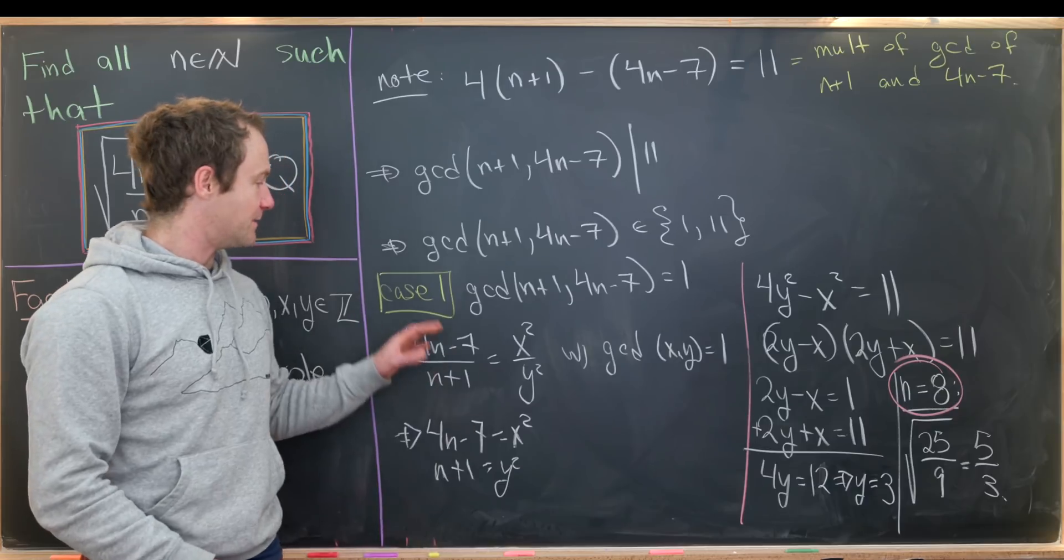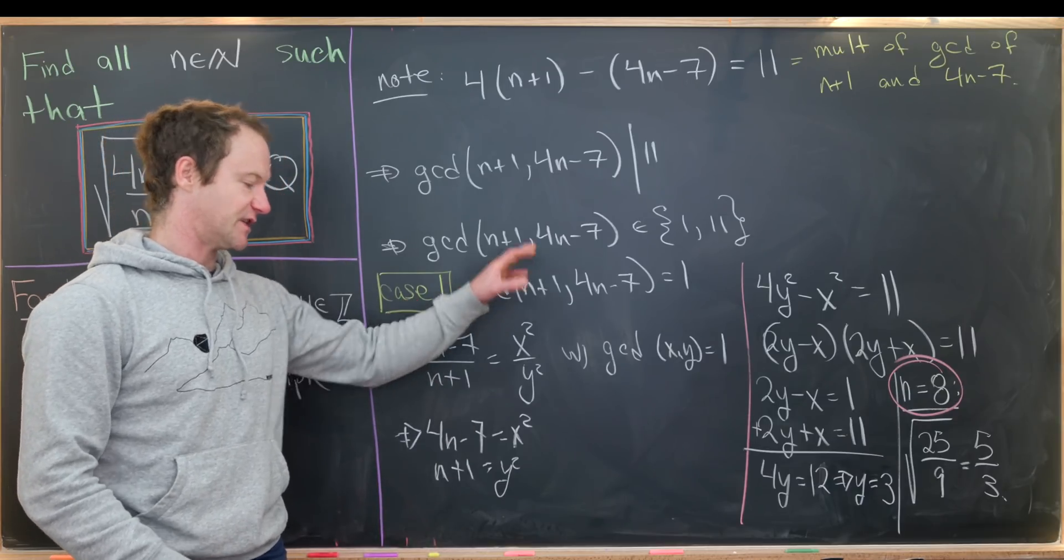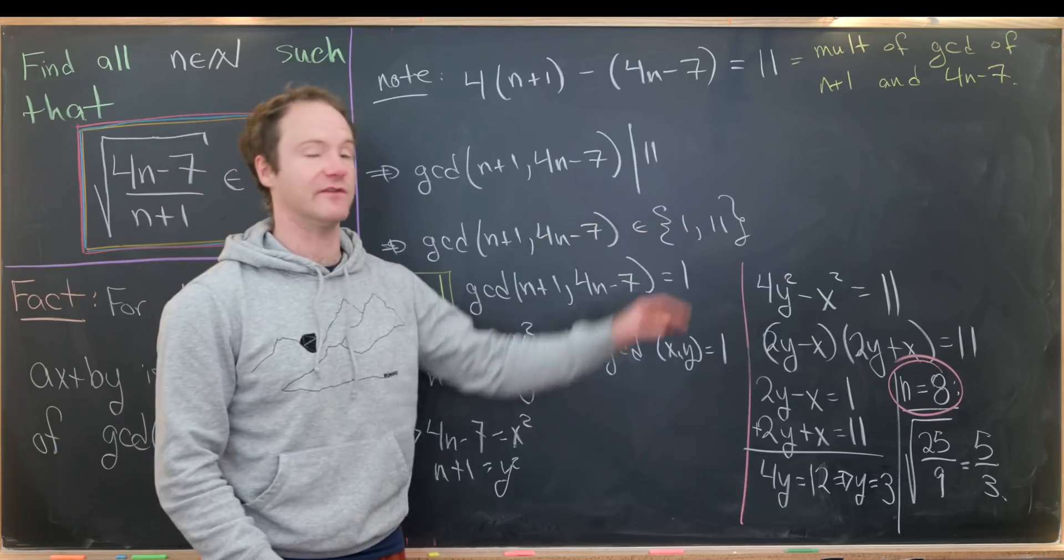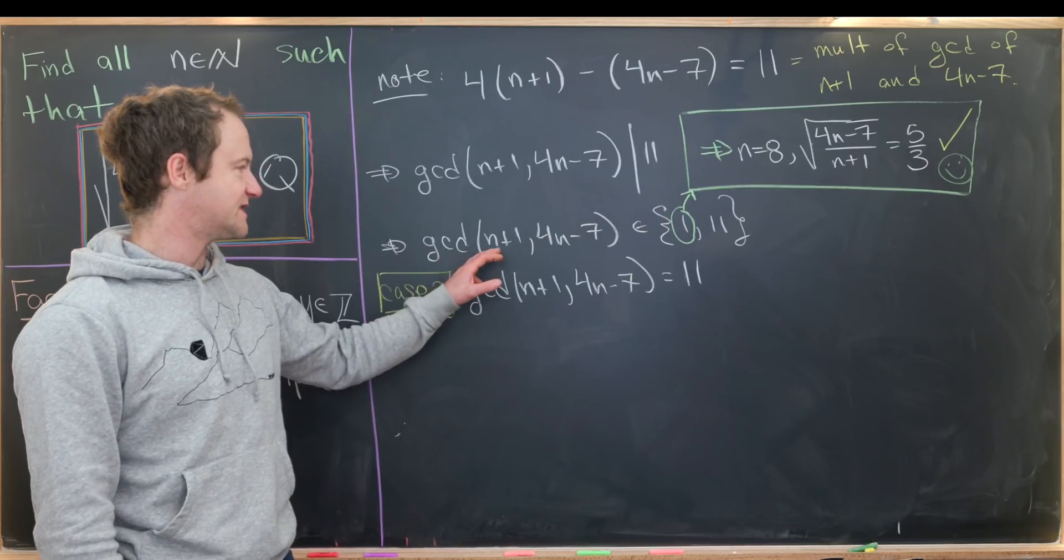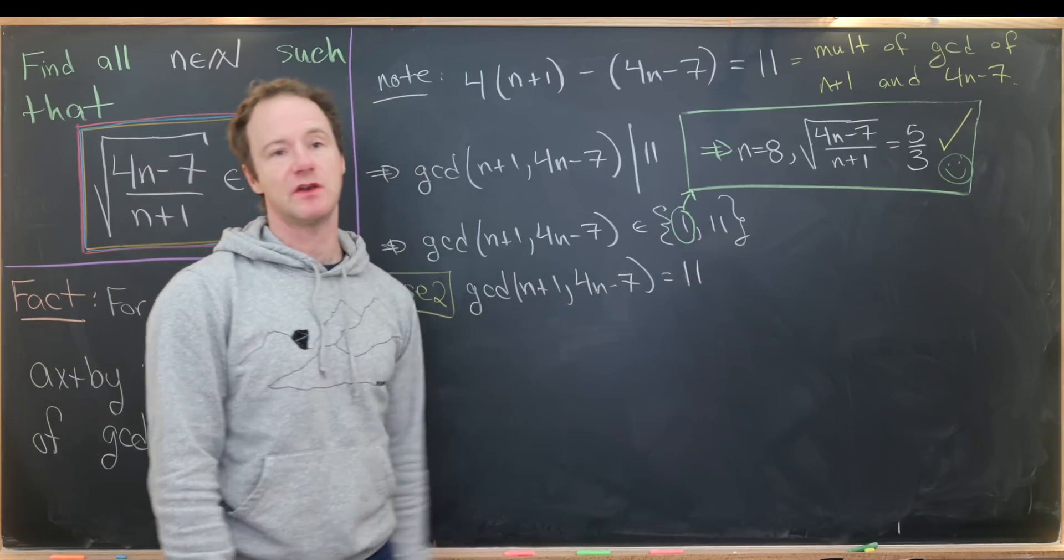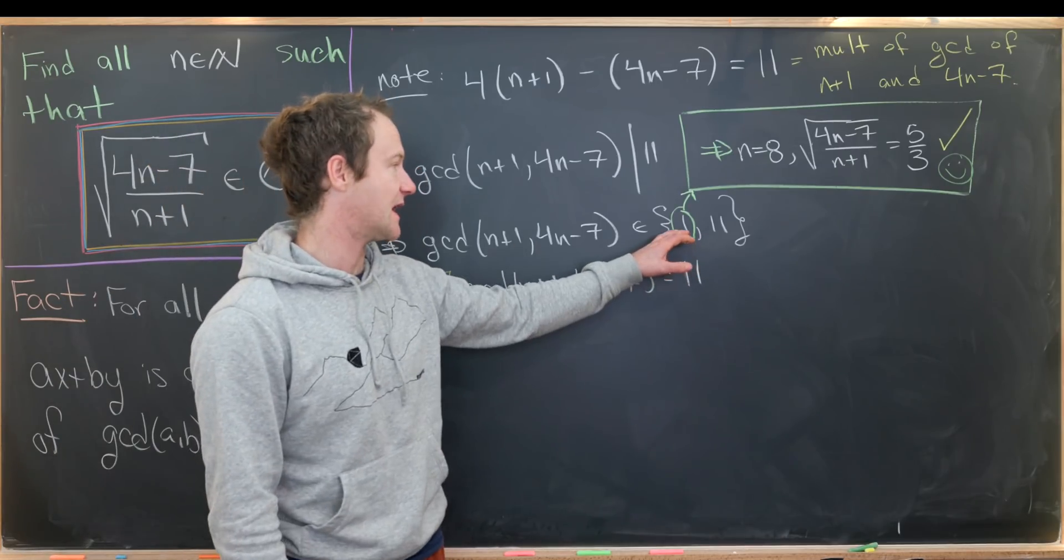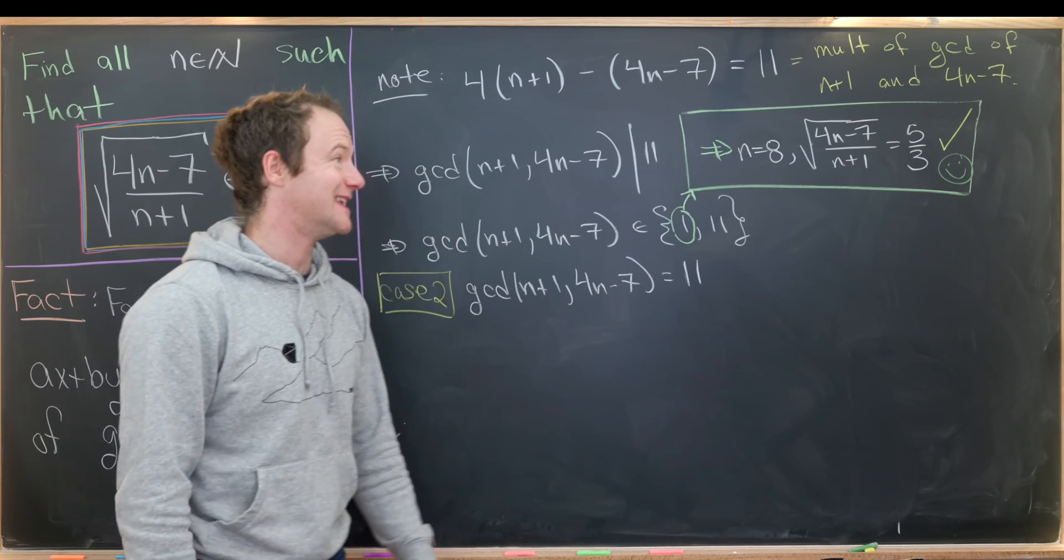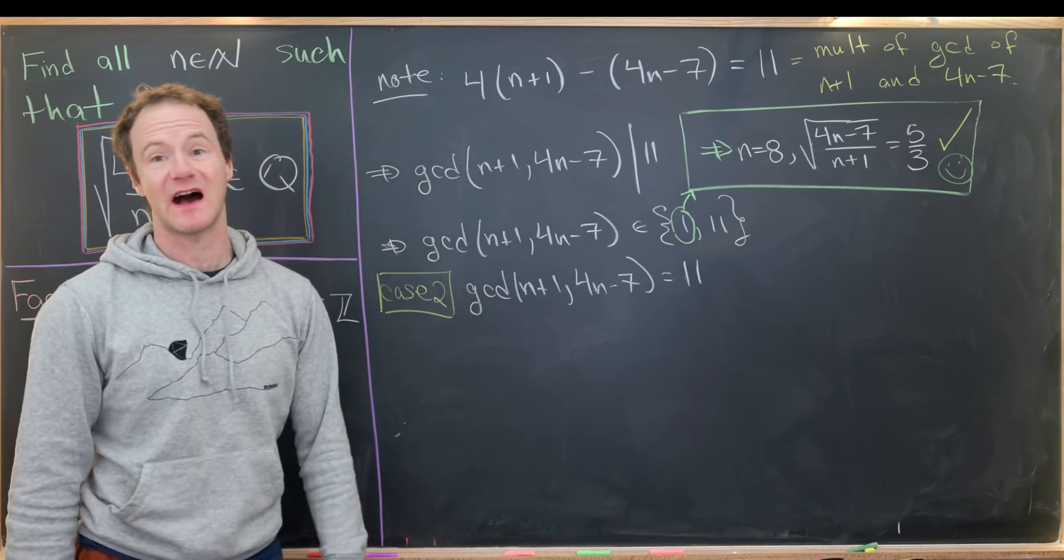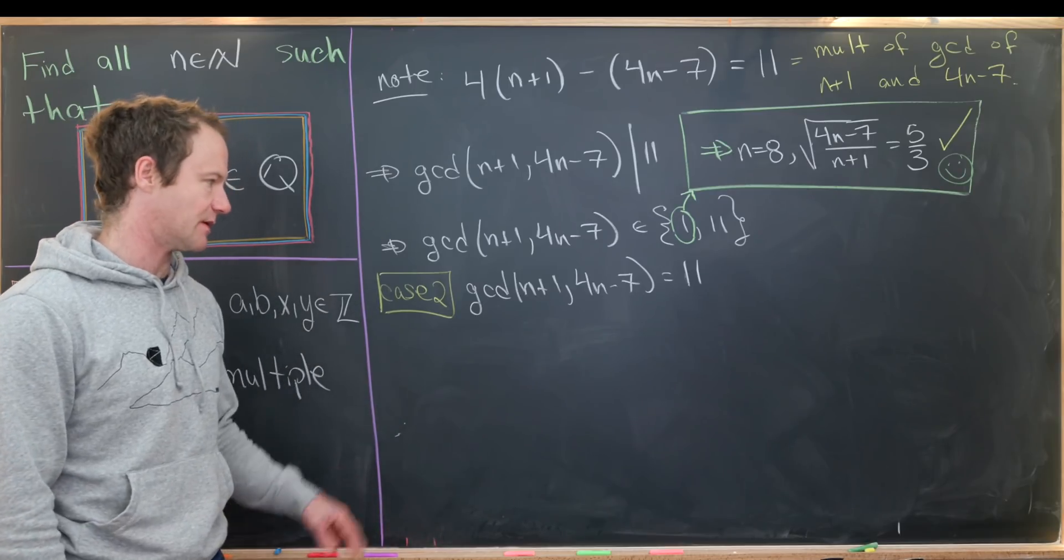But that's only based off this first case where the gcd was 1. Let's look at the case if the gcd is 11. So we argued the gcd of n+1 and 4n-7 could only be 11 or 1. In the case that we had it equal to 1, we saw that we had a solution n = 8, which represented this object being equal to 5/3, which is a rational number.